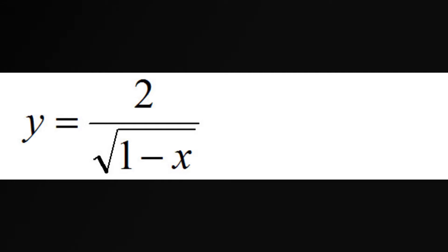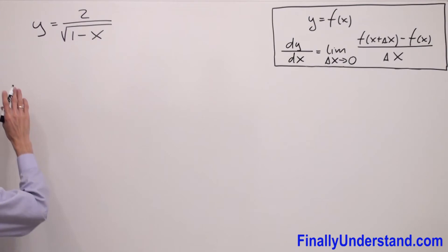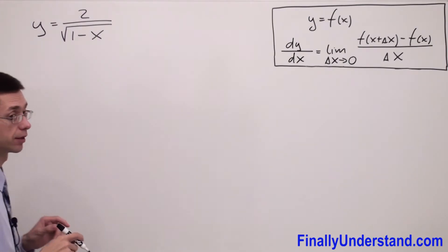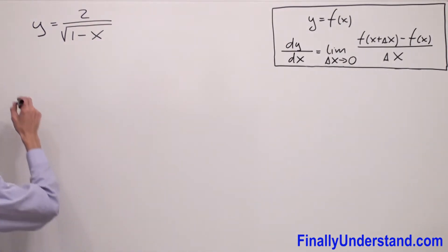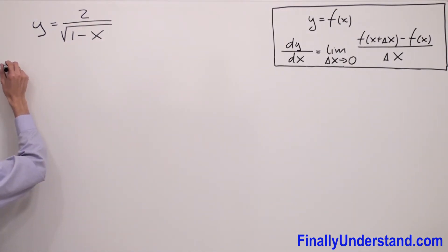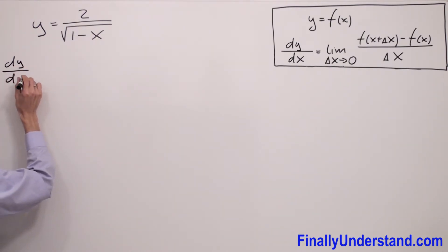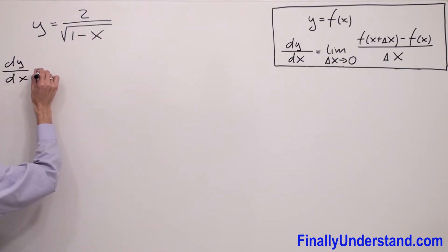We have another example on the board. We're supposed to find the derivative of this function using the definition. Because I'll need a little bit more space, I'm going to go to the problem right away. We are going to use this formula, so we have dy over dx.